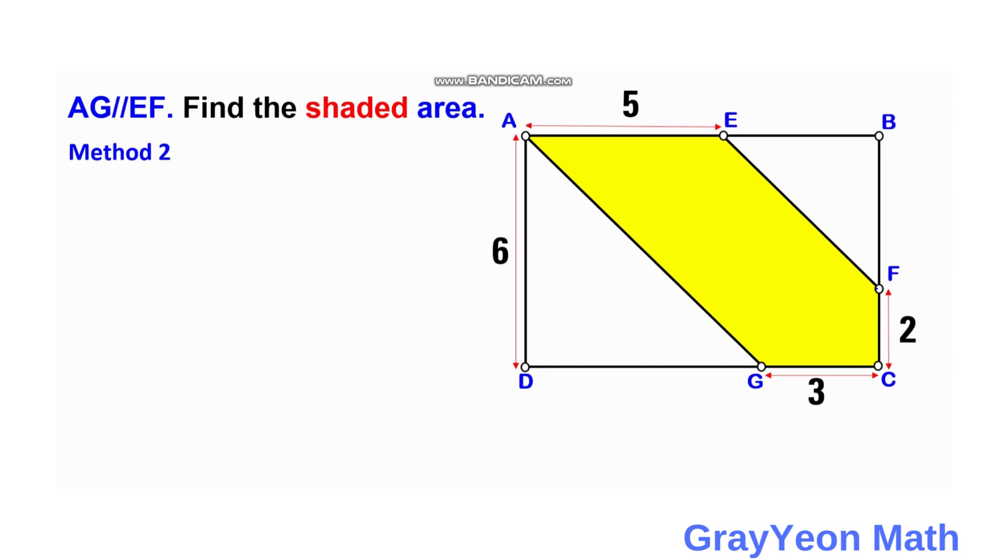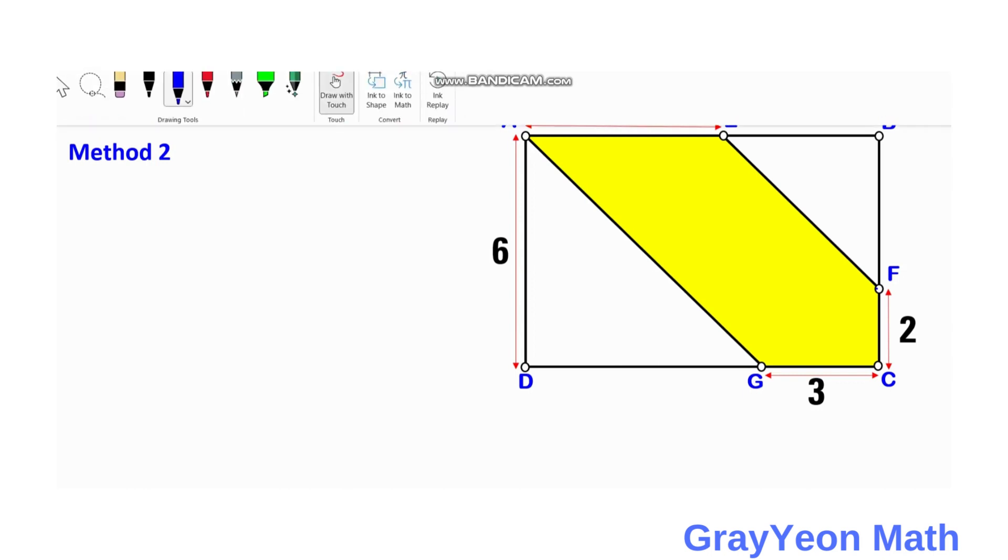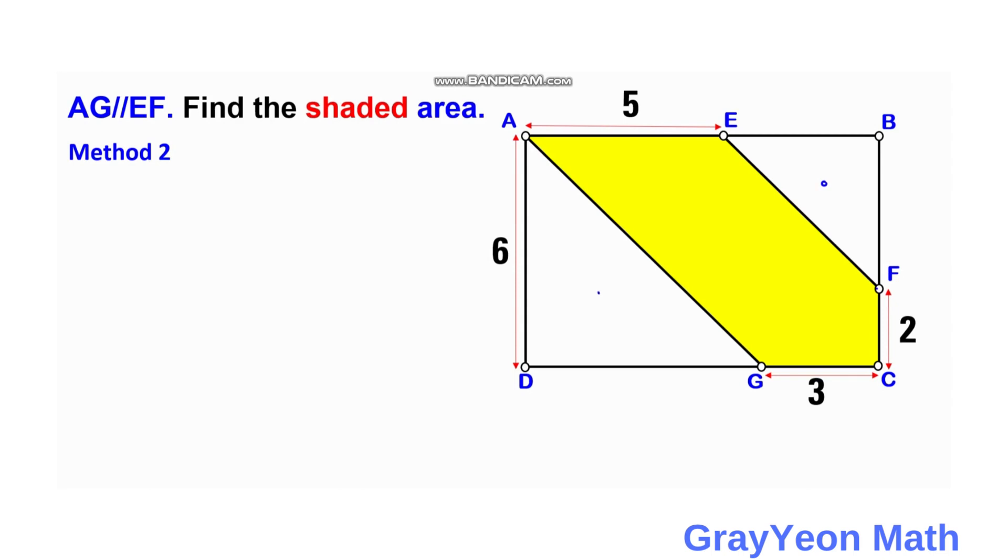For the second method we consider the unshaded parts, these two triangles. So this triangle and this triangle. If we label this E, B, let's label this X. So if that is X and this is B, F, 6 minus 2 is 4.